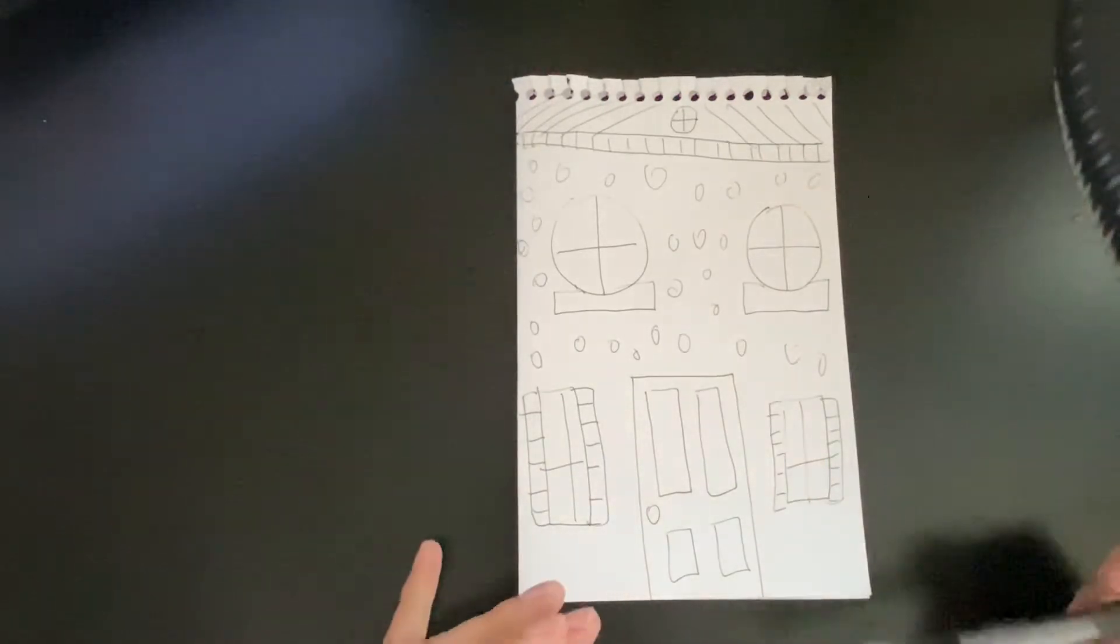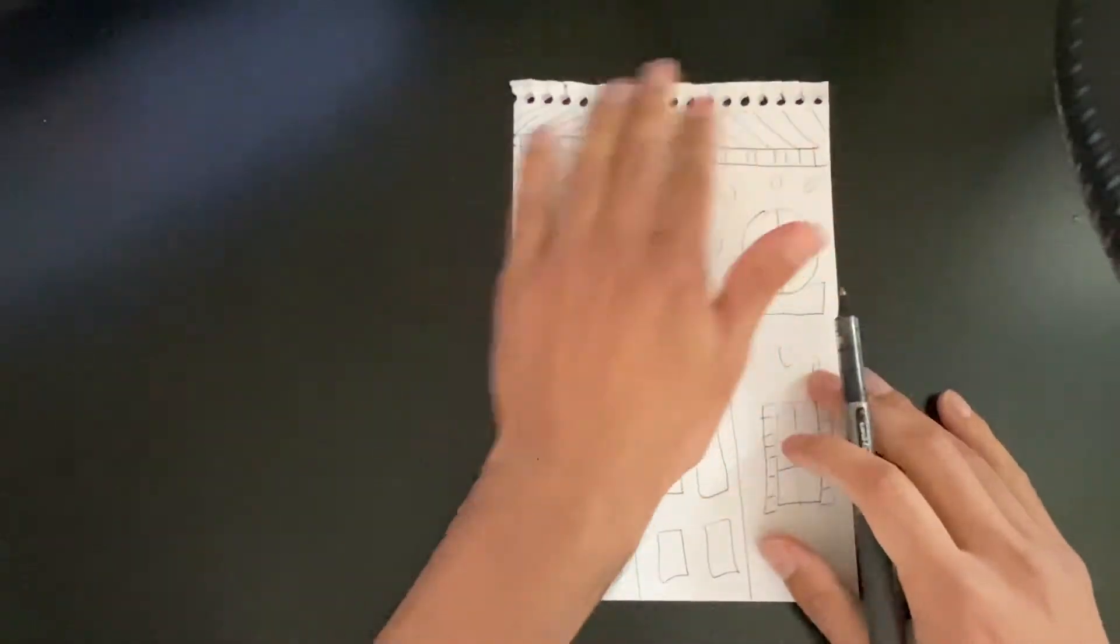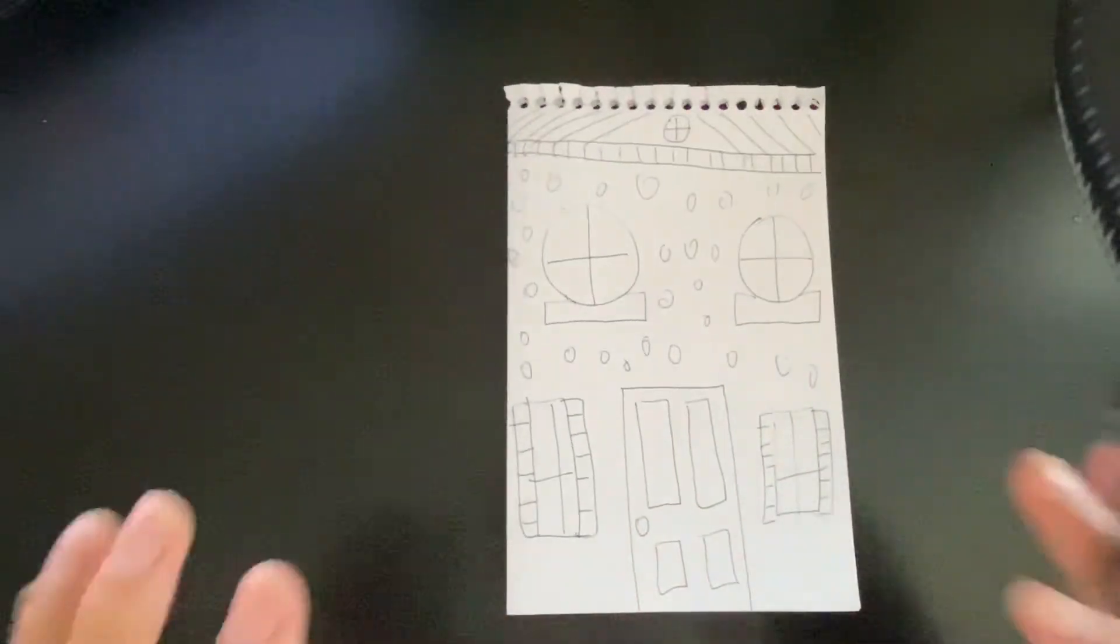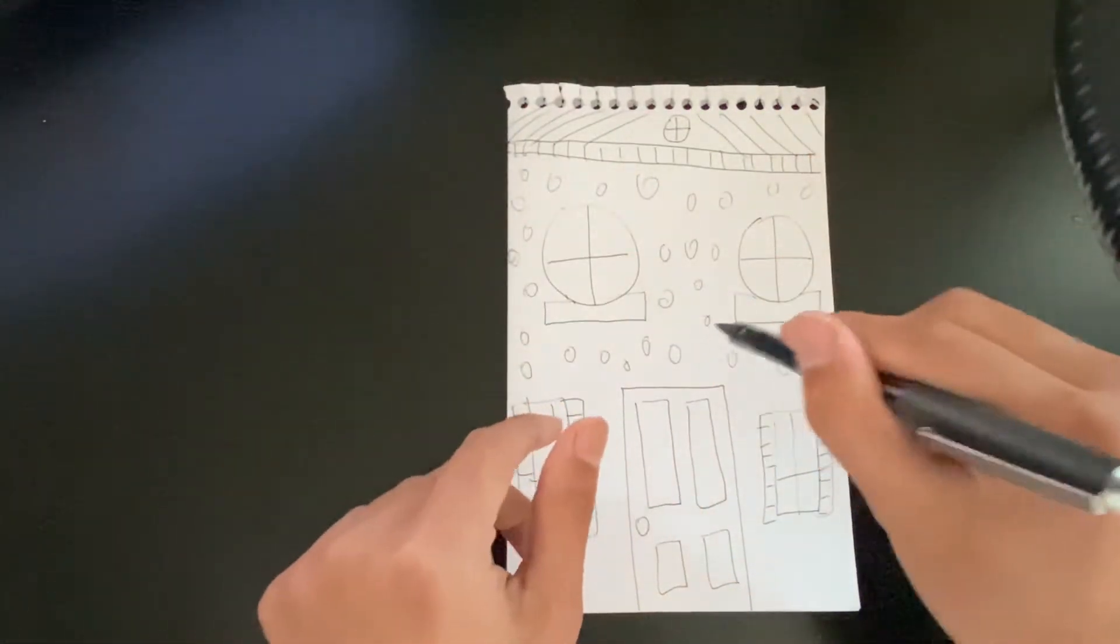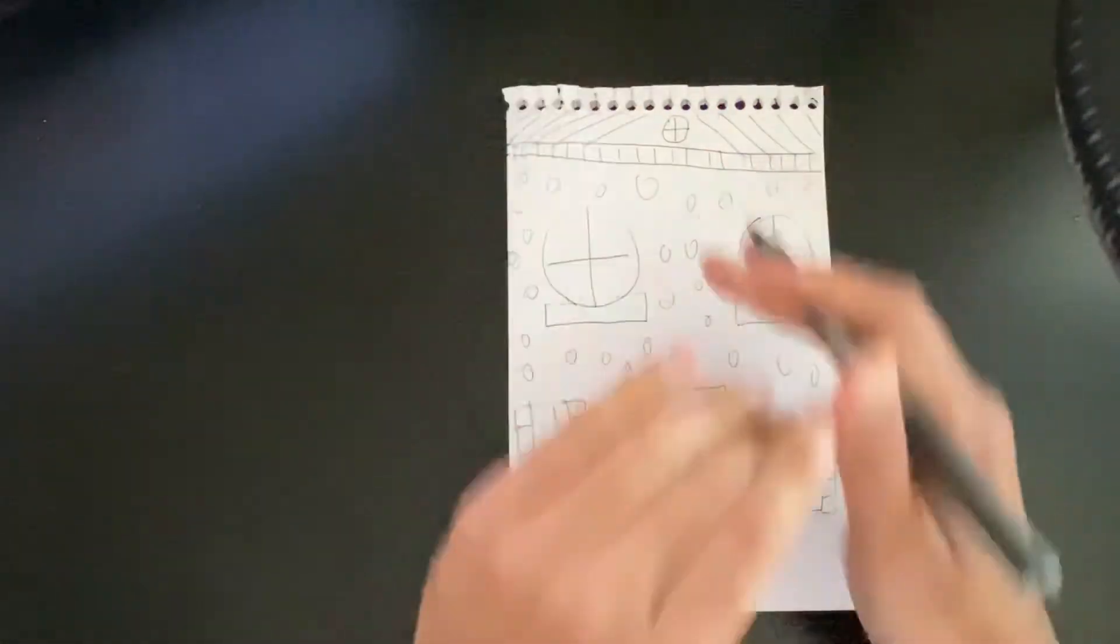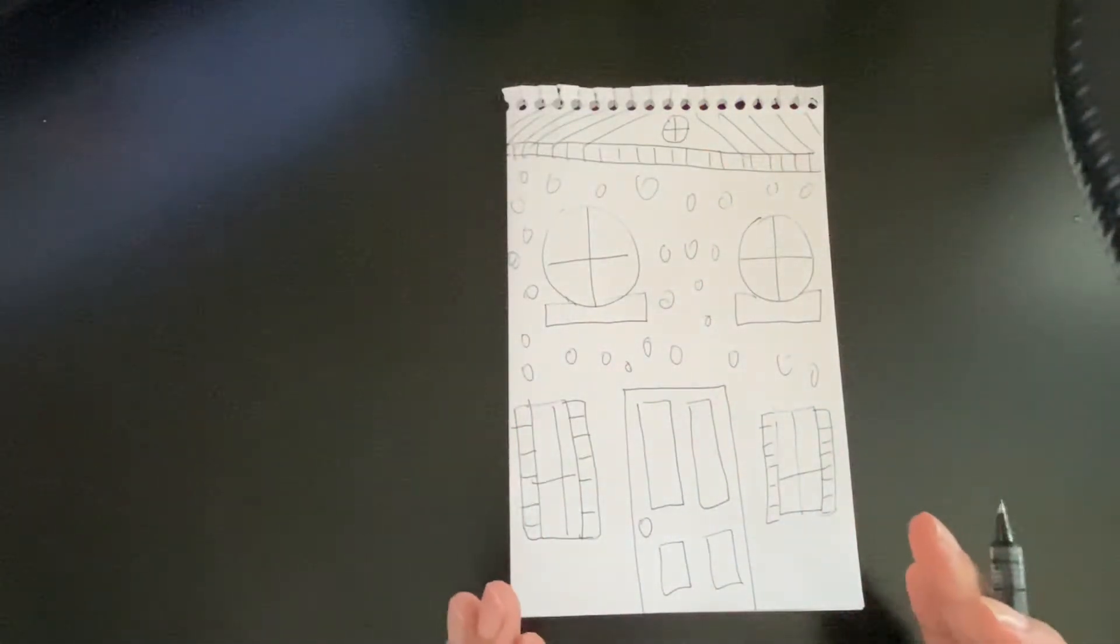So I finished decorating the front of my house. Remember, this entire shape of the paper is the house. So you don't need to draw a little rectangle on the inside and then draw your house. Draw your house for the entire part of the paper.